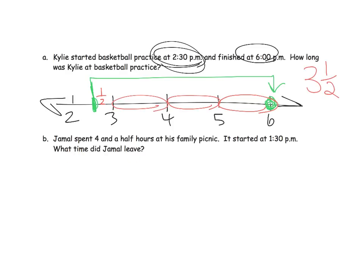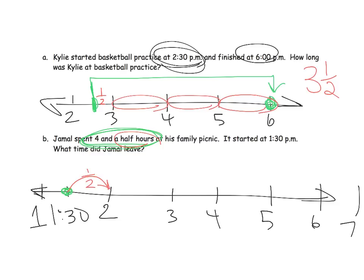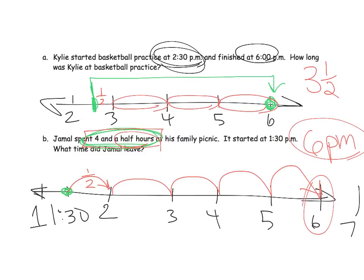And down here: Jamal spent four and a half hours at his family picnic. It started at 1:30. What time did Jamal leave? So we're going to start at 1:30, which is right between 1 and 2. We know he started at 1:30 and spent four and a half hours. Let's take care of the half hour first, going from 1:30 to 2 — there's our half hour. Then we've got 1, 2, 3, 4 more hours, which puts us at 6 o'clock. So 6 p.m. is four and a half hours later.